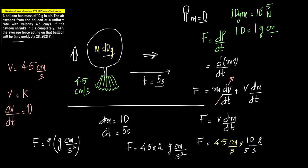So this actually becomes F equals 9... what is grams centimeters per second squared? It becomes dynes. So the correct option is force equals nine dynes.